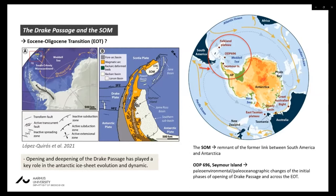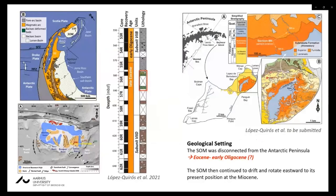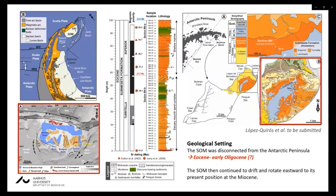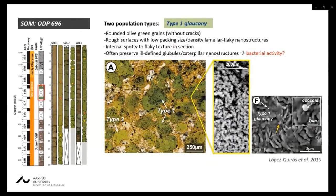The Cenozoic sedimentary record of ODP Site 696 and Seymour Island in the tip of the Antarctic Peninsula covered the late Eocene–early Oligocene, providing an opportunity to gain insight into the paleoenvironmental evolution of this region — including tectonic, paleoclimatic, and paleoceanographic changes that occurred during the gateway opening. This presentation focuses on described glauconitic facies from ODP Site 696 and the Submeseta Formation in Seymour Island. A suite of textural, mineralogical, and geochemical analyses were used to characterize in detail this glauconitization event.